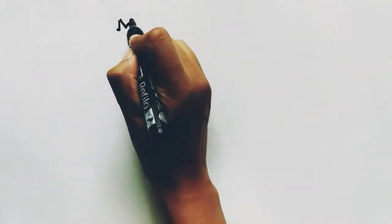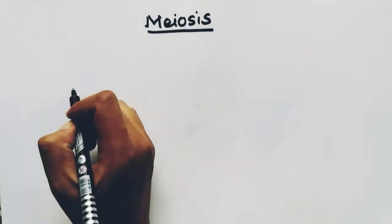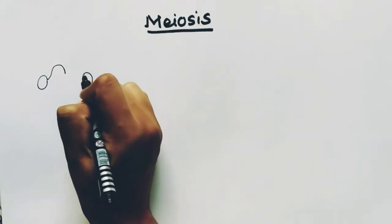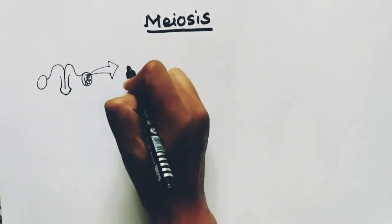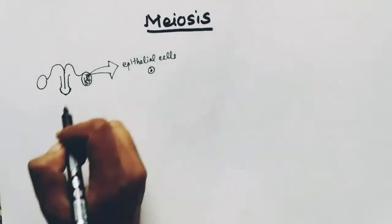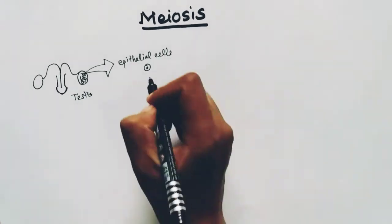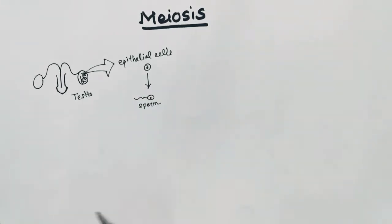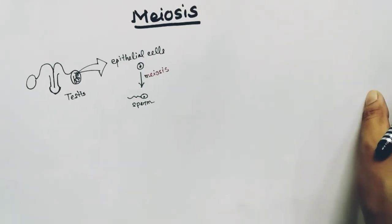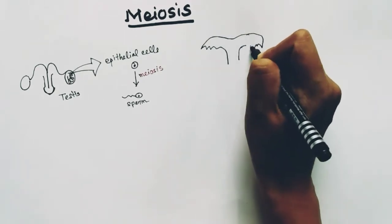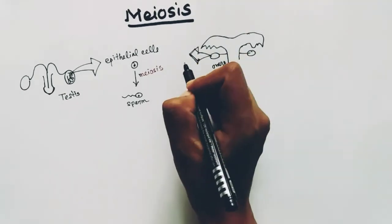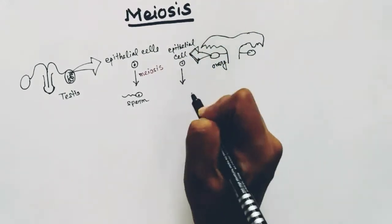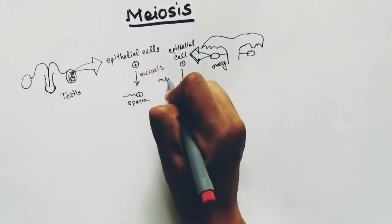Today we are talking about meiosis — meiotic cell division. Meiosis is a special cell division which only occurs during the formation of gametes, that is male gametes or female gametes. Inside the male reproductive organs, inside the testis, there are seminiferous tubules. Inside the seminiferous tubules there are epithelial cells. These cells go through meiosis and form the male gametes, the sperms. Inside the female reproductive organs, inside the ovary wall, there are also epithelial cells which go through meiosis and form the female gamete, the ovum.